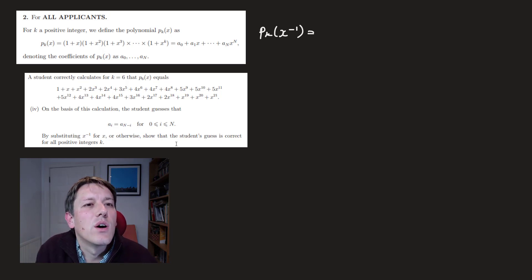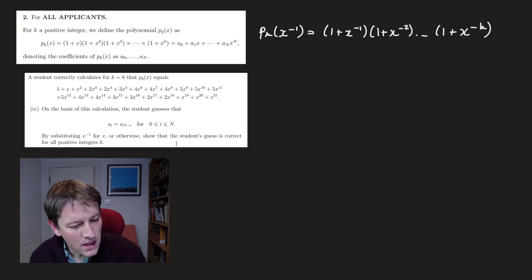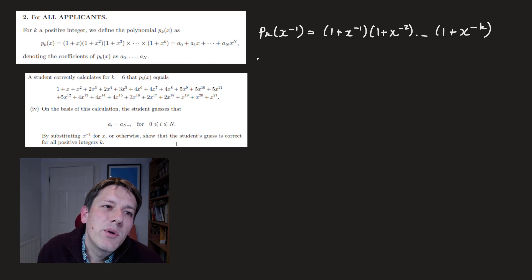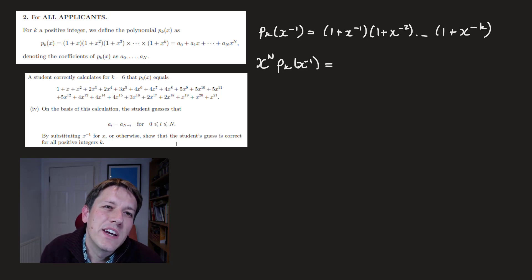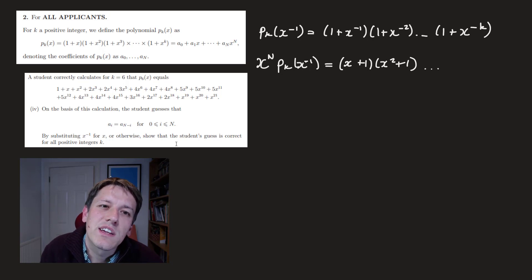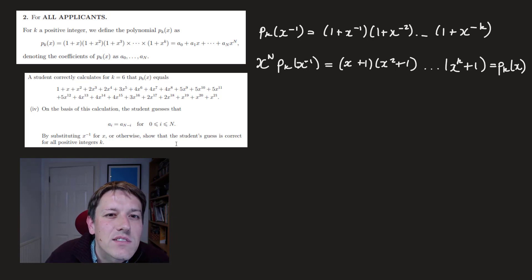So if I do p_k(x^{−1}), or 1/x, what I get is (1+x^{−1})(1+x^{−2})...(1+x^{−k}). The crucial thing to notice is that if you multiply this by x^N — and I've chosen x^N because that's exactly the order of the polynomial — I can multiply the first bracket by x, the next by x², by x³, etc. So I end up with (x+1)(x²+1)(x³+1)...(x^k+1), which is just exactly p_k(x).